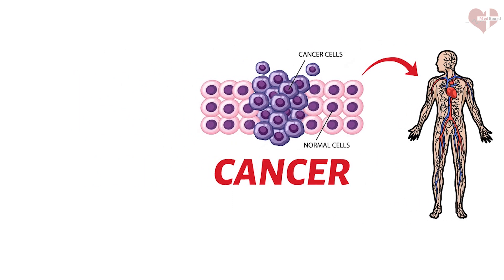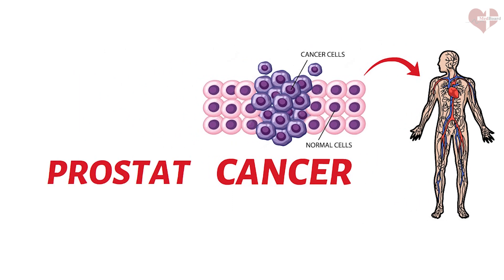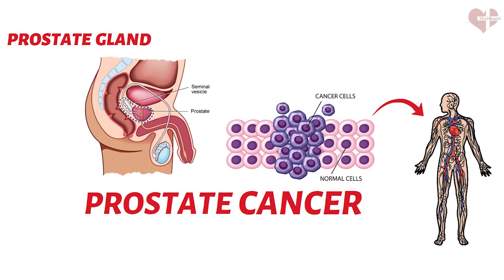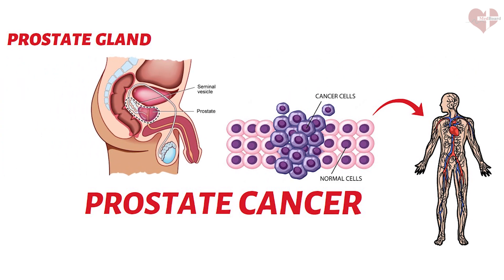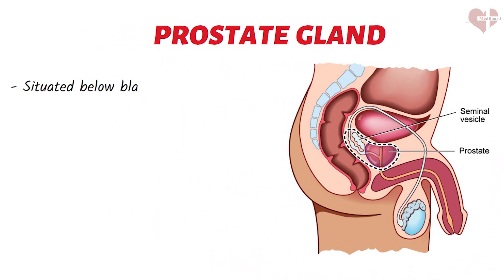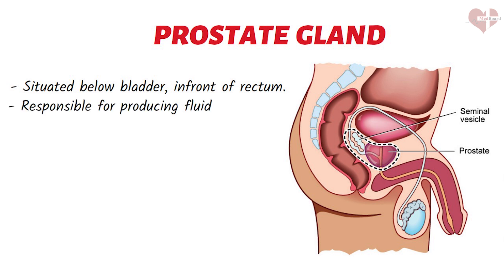Prostate cancer is a type of cancer that affects the prostate gland, which is a small walnut-sized gland located in the male reproductive system. It is situated just below the bladder and in front of the rectum. The prostate gland is responsible for producing and secreting some of the fluids that make up semen, which is essential for reproduction.